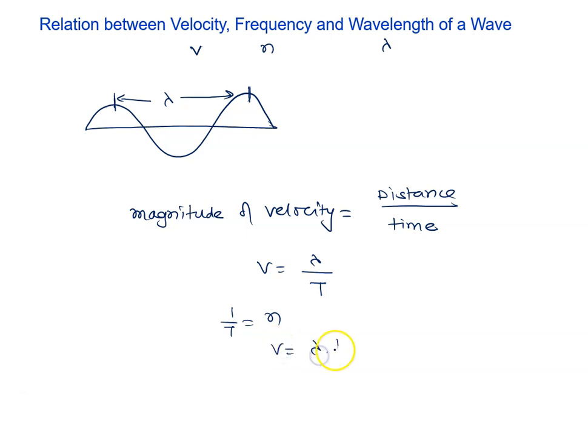V equals lambda times one upon T. So v equals lambda, one upon T is frequency n. The relation between velocity, frequency, and wavelength is v equals n lambda.